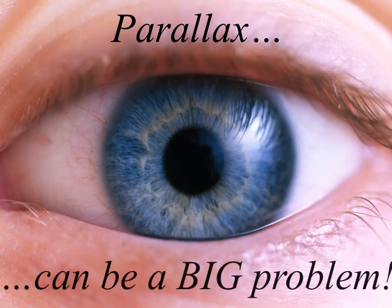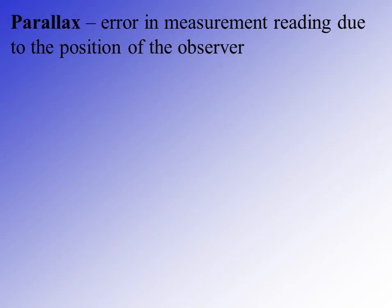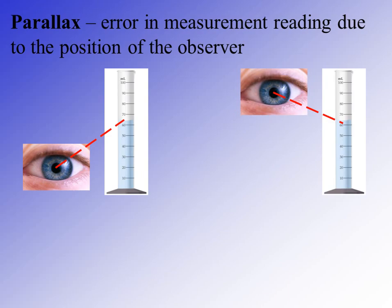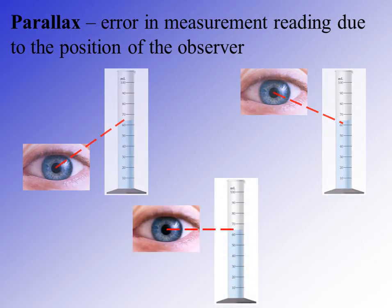When you read a measurement, parallax can be one of your biggest enemies. Parallax is error in measurement reading due to the position of the observer. If you hold your graduated cylinder above your line of sight, you will likely get a reading that is too high. If your cylinder is on the table and you're looking down at it, your reading will be too low. The key is to position your eye so that you are head-on with the measurement you're trying to take — whether it's a graduated cylinder, a ruler, a triple beam balance, or any other instrument. That is the best way to avoid parallax.